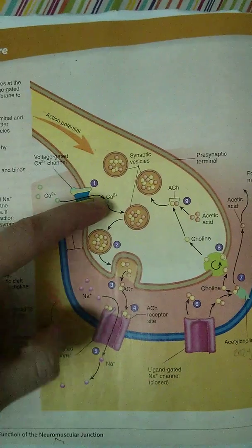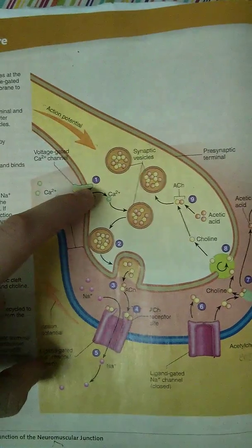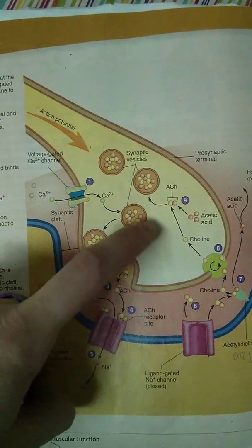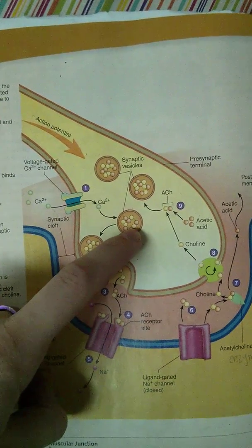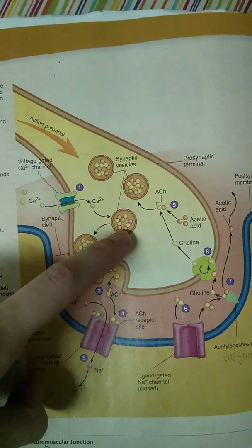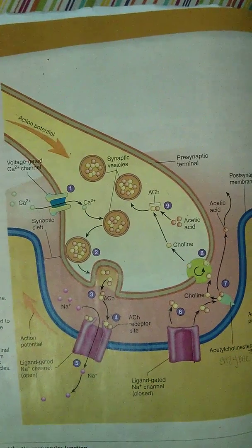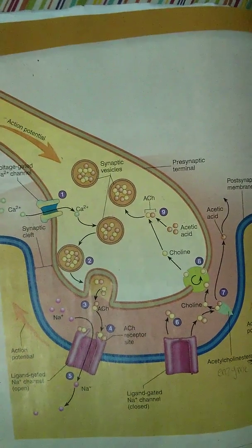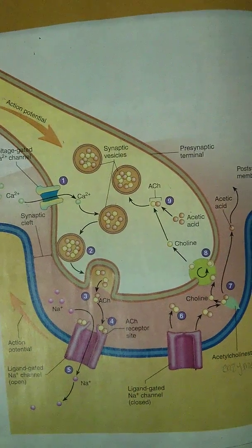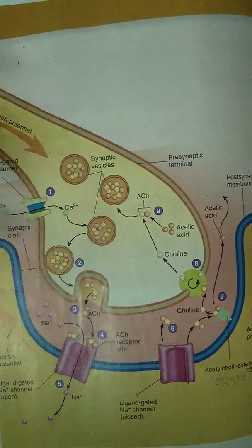Now calcium, it is inside the presynaptic terminal. It is going to stimulate these, which these are synaptic vesicles. Vesicles are kind of like little carriers that hold neurotransmitters. Neurotransmitters is just another word for a chemical, and they can hold any type of chemical,